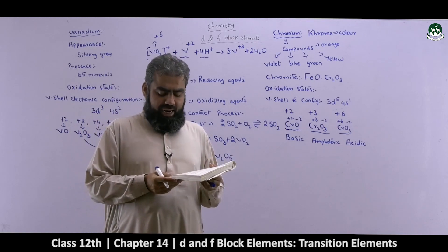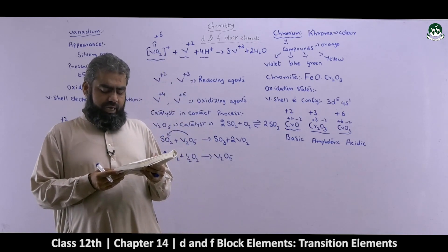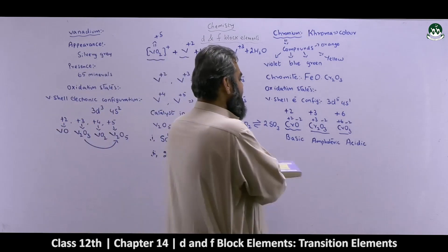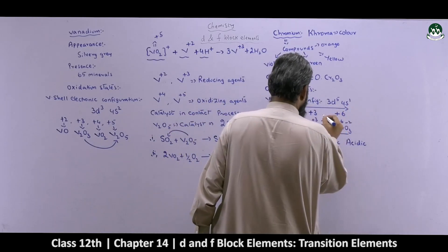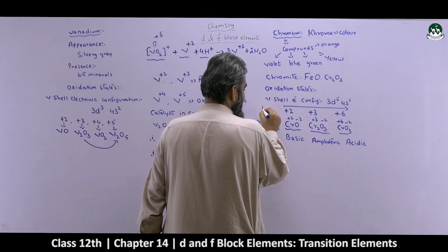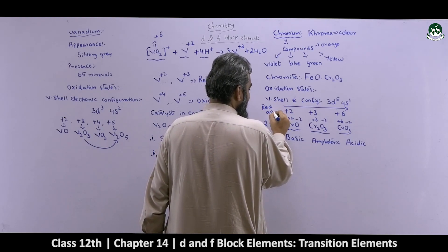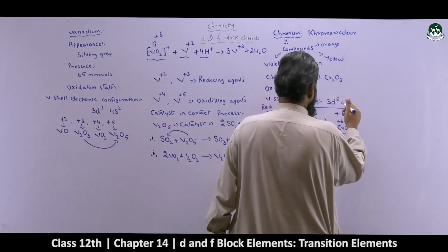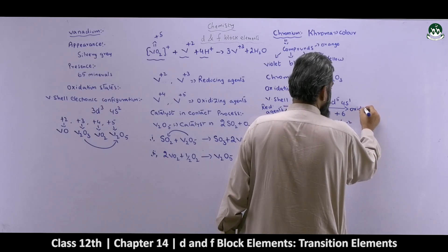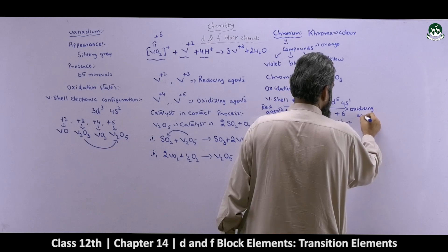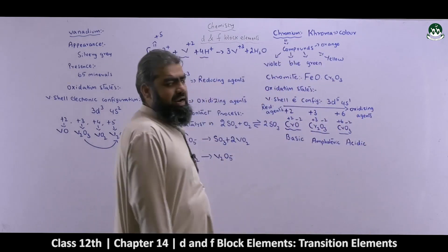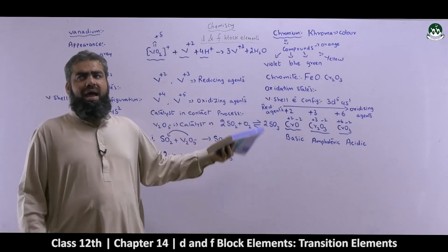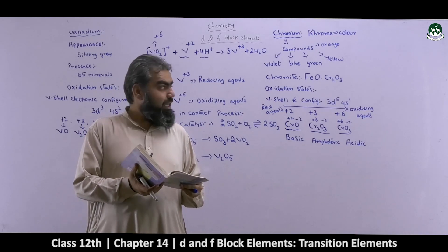In the plus 2 oxidation state, chromium compounds act as reducing agents, and in the plus 6 oxidation state they act as oxidizing agents. So lower oxidation states of chromium generally behave as reducing agents, and higher oxidation states tend to behave as oxidizing agents — this nature changes depending on the charge present.